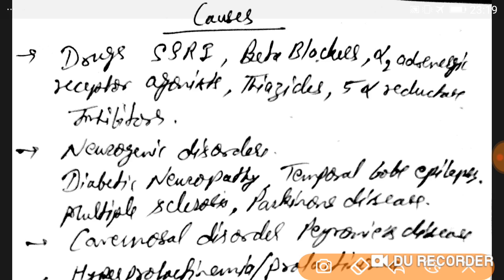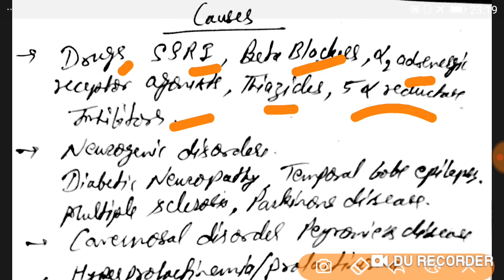First, carefully review the patient's drug history. Drugs that cause ED include SSRIs — selective serotonin reuptake inhibitors — beta blockers like propranolol, alpha-2 adrenergic receptor agonists, thiazides such as telmisartan with hydrochlorothiazide or losartan-H, and alpha reductase inhibitors like finasteride and dutasteride, which are used in prostate reduction. These medicines cause erectile dysfunction.